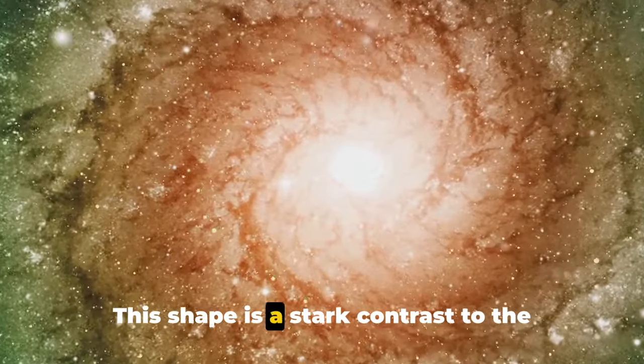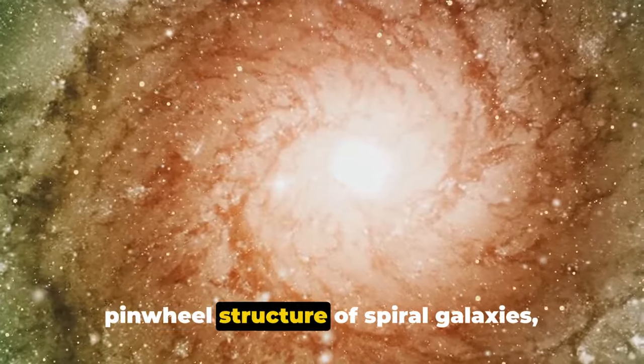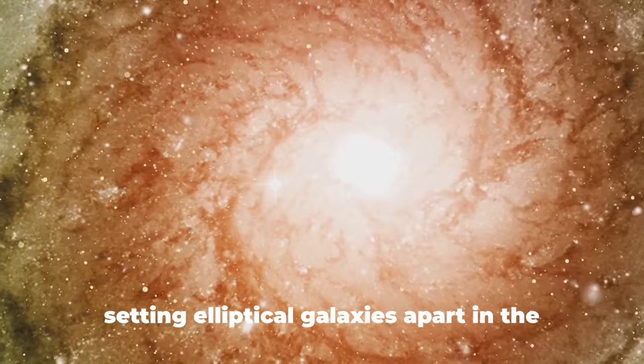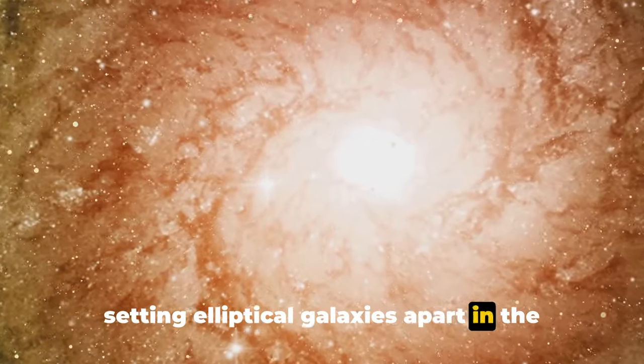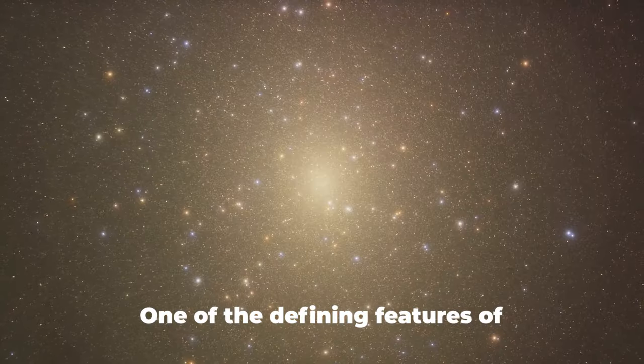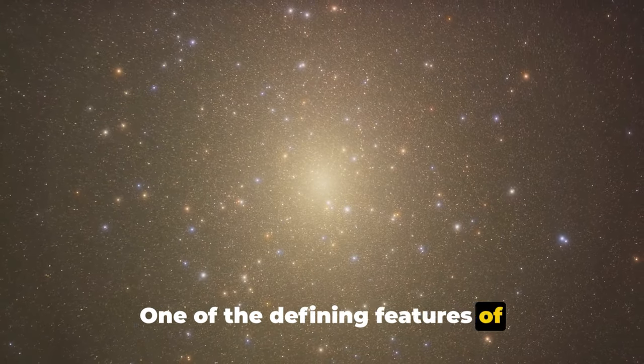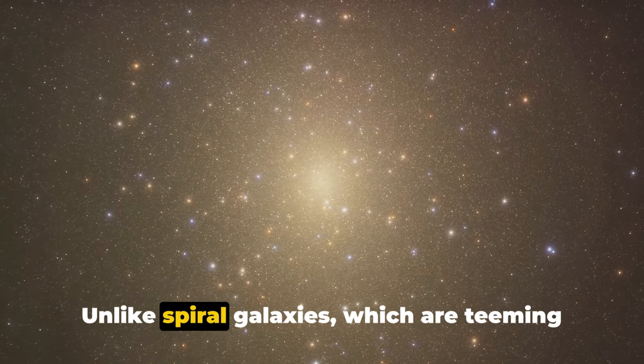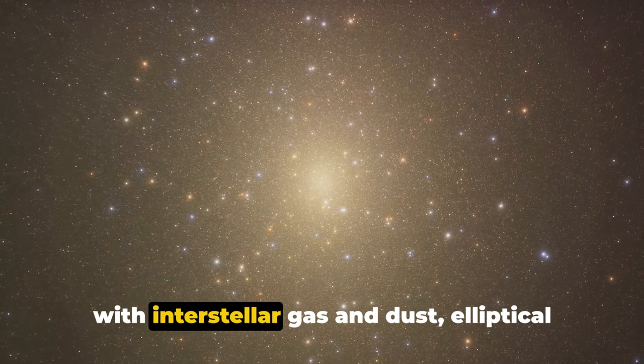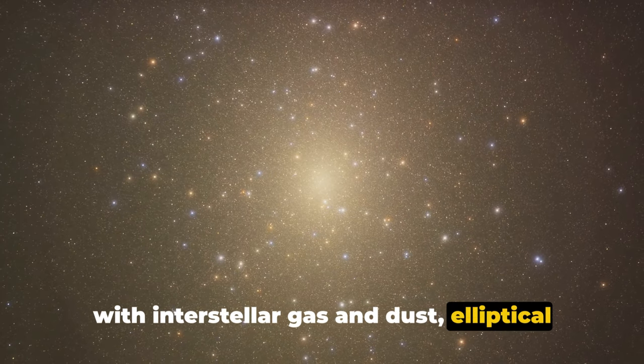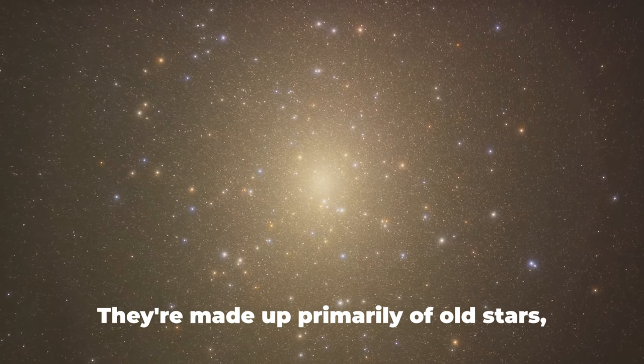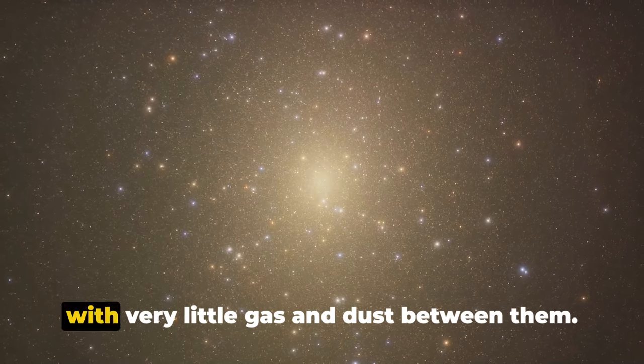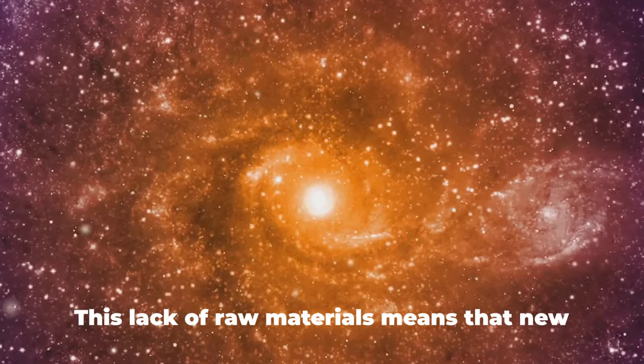This shape is a stark contrast to the pinwheel structure of spiral galaxies, setting elliptical galaxies apart in the universe's grand tapestry. One of the defining features of elliptical galaxies is their composition. Unlike spiral galaxies, which are teeming with interstellar gas and dust, elliptical galaxies are relatively barren. They're made up primarily of old stars, with very little gas and dust between them.